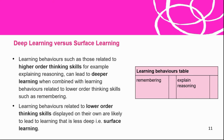Deep learning versus surface learning. Learning behaviors such as those related to higher-order thinking skills — for example, explaining reasoning — can lead to deeper learning when combined with behaviors related to lower-order thinking skills such as remembering. Remembering is the lowest-order thinking skill, but unfortunately in our context in Africa, a lot of students just want to memorize things to write in the exam. Once the exams are over, they're not interested in doing anything else with that information. Learning behaviors related to lower-order thinking skills displayed on their own are likely to lead to surface learning. We no longer want surface learning — we want learning to be deep.